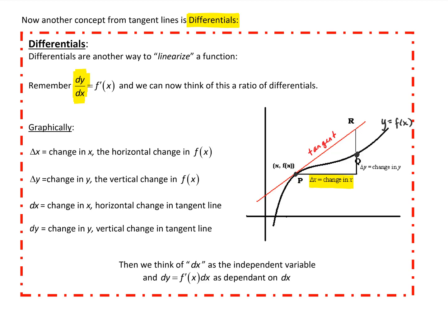Delta y is the change in y — it's the vertical change in the function. Delta y is this length representing the vertical change as we move from p to q. So delta x is the horizontal change and delta y is the vertical change.